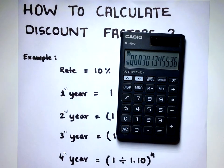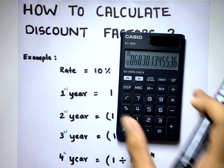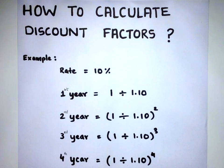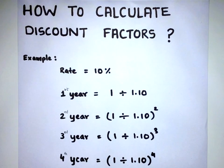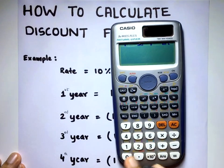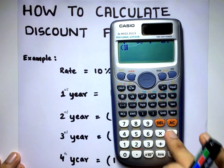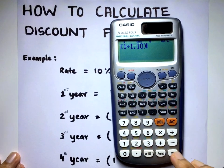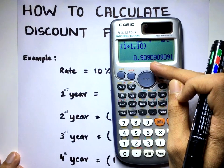One more time, discount factor after the fourth year. That's simple. Now, scientific calculator is also really easy because you know the formula. What are you going to do? Let's just use the brackets first. 1 divided by 1.10 equals the discount factor of the first year.